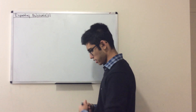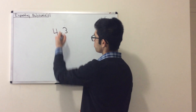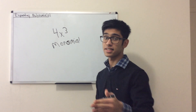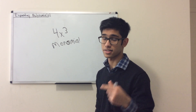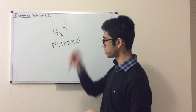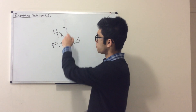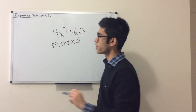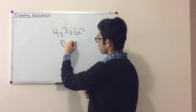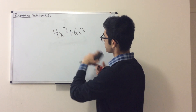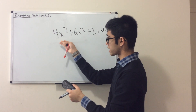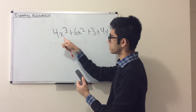So let's say we had 4x cubed — I call that a monomial, meaning there's only one term in it. Think of only one word in a sentence. If you had 4x cubed plus 6x squared, then you have two terms, so it's called a binomial. And if you had 4x cubed plus 6x squared plus 3 plus 4y squared, you have many different types of terms — that is called a polynomial.